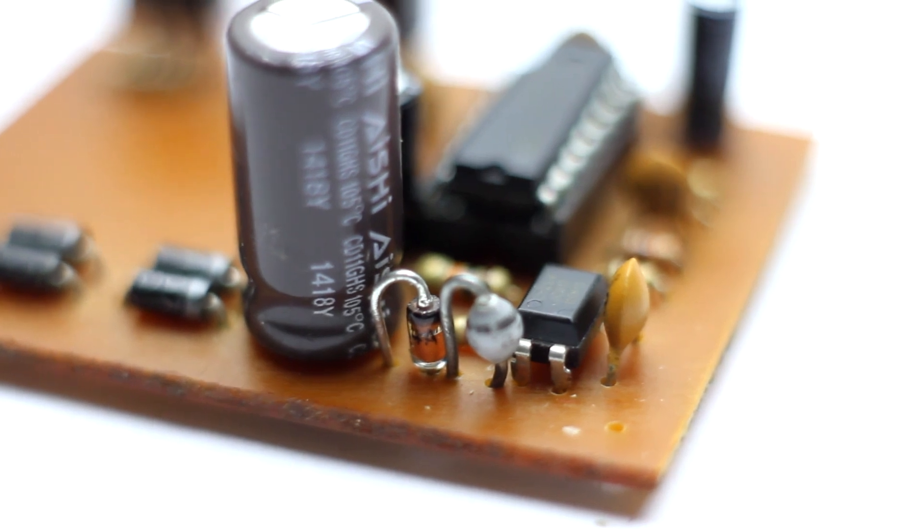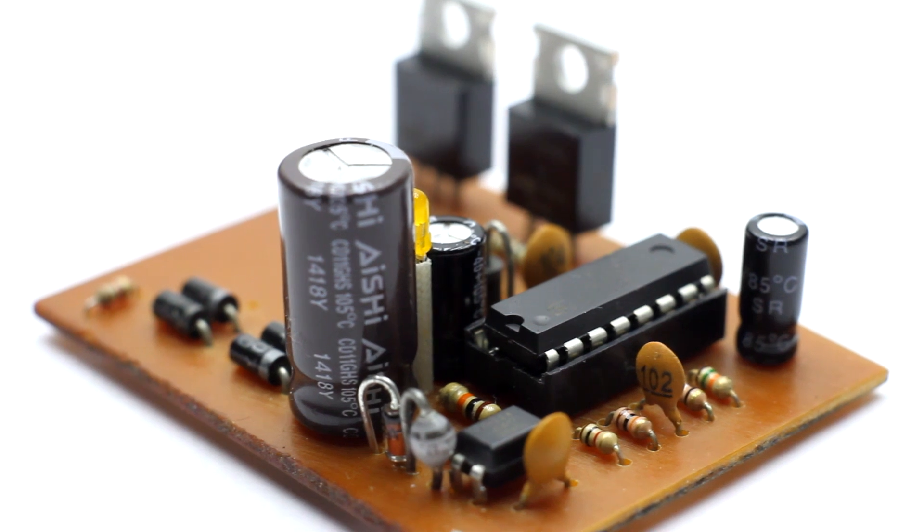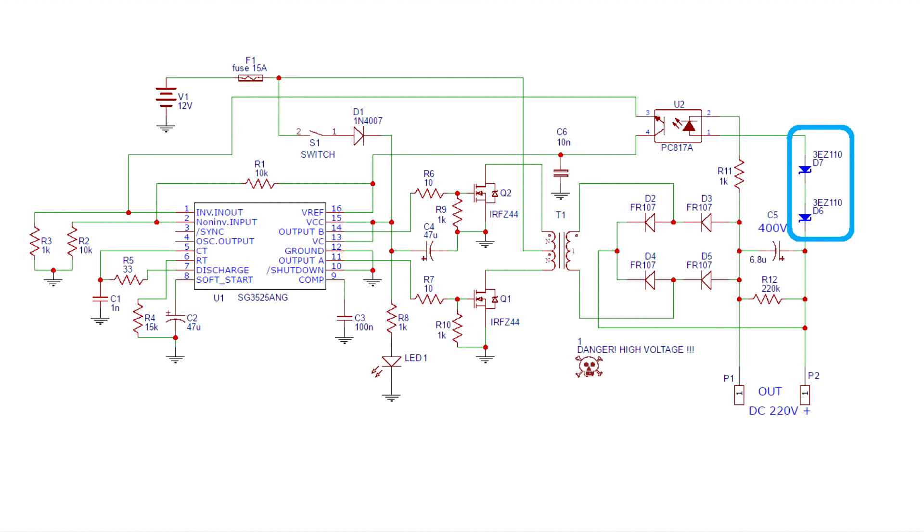Zener diodes at the desired value of the output voltage. In my version, two zener diodes are connected in series. Preferable to use zener diodes with the same stabilization voltage. For example, two pieces of 110 volts for the total 220 volts.